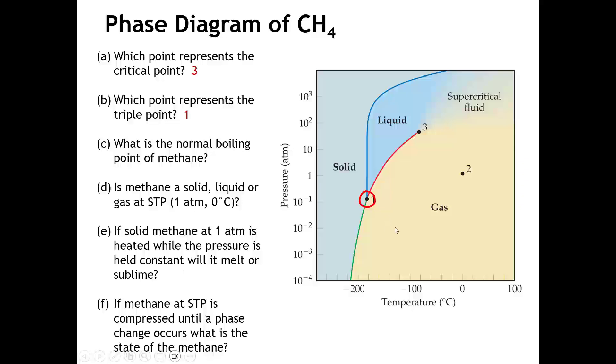The next question asks us to identify the normal boiling point of methane. So that's going to be the temperature at which a line drawn at one atmosphere crosses from the liquid to the gas. And we see that line is going to go over from the liquid to the gas, cross the vapor pressure curve right here. And that turns out to be approximately minus 160 degrees C. 161, if we're being precise.